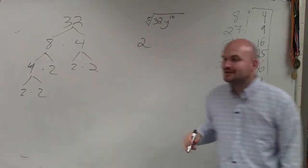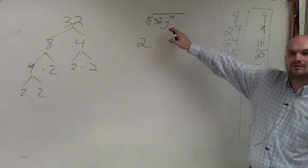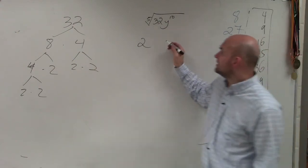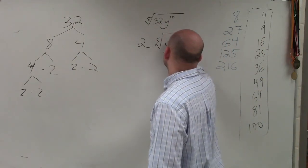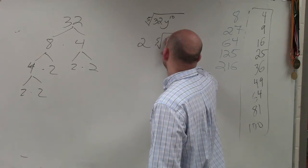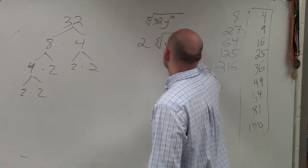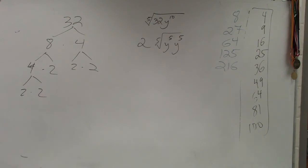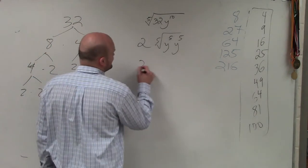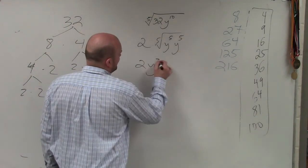Then, what is the fifth root? I can rewrite that as the fifth root of y to the fifth times y to the fifth. Because what's y to the fifth times y to the fifth? Y to the tenth. And what's the fifth root of y to the fifth? Y. Y times the fifth root of y. So it's going to be 2y squared.